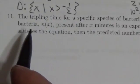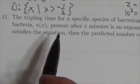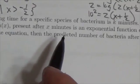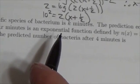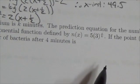So the predicted equation for the number of bacteria is n(x). n is a function of x here. Present after x minutes is an exponential function defined by 5 times 3 to the x over k.